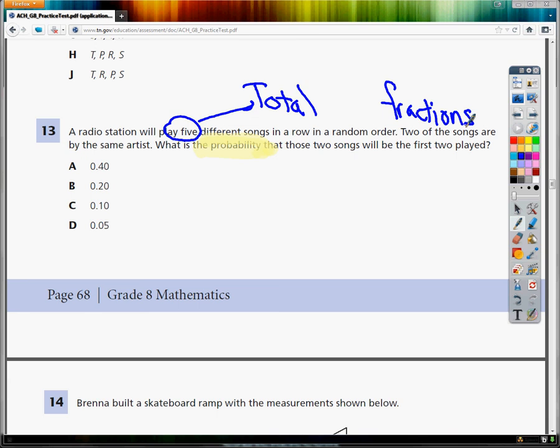So I'm going to set up my first fraction assuming that I can have any of those songs played. When I set up my fraction, my total goes on the bottom and my preferred goes on top. Preferred is like what I'm looking for here. I want to have that song played by the same artist twice in this scenario. So my total is that there are five songs to choose from.